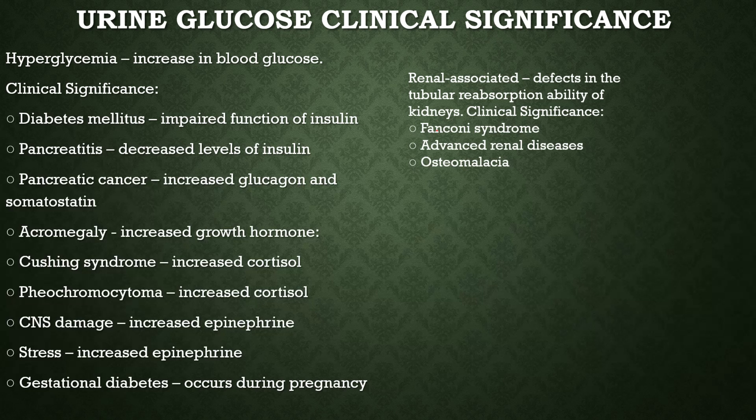Clinical significance of urobilinogen: impaired liver function decreases the liver's ability to process recirculated urobilinogen. Extensive hemolysis of RBCs increases blood urobilinogen, which is filtered by the kidney and appears in urine. Seen in liver diseases (hepatitis, carcinoma, cirrhosis), hemolytic disorders, transfusion reactions, and sepsis.